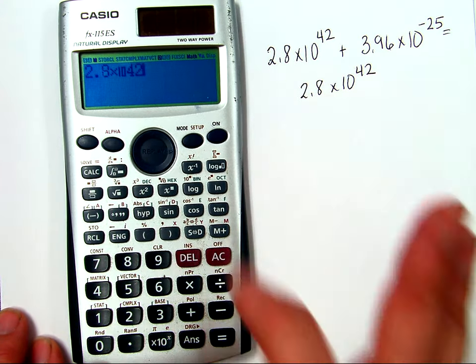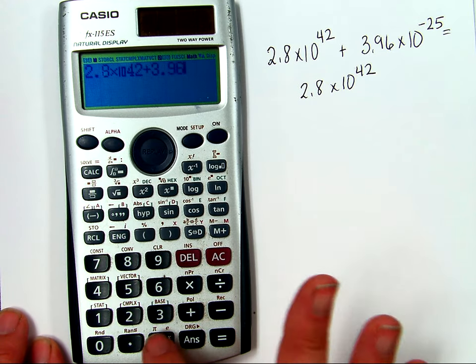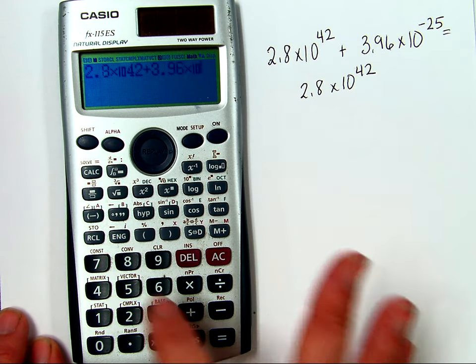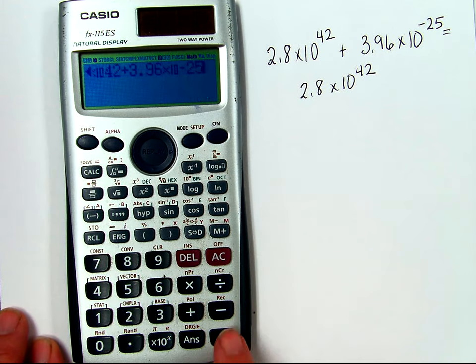And on this one, you have to hit plus 3.96 times 10 to the E. This time, I'll use my negative key and 25. And let's hit equals.